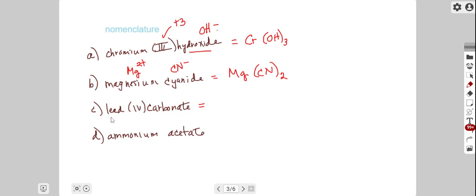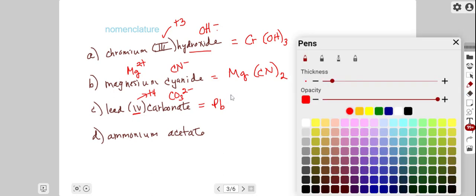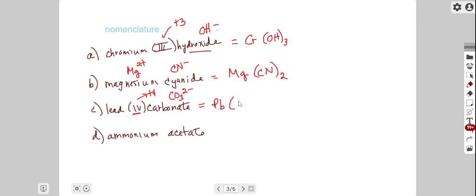The next example uses another polyatomic ion and another transition metal. Notice the 4 for the Roman numeral represents a plus 4 charge for lead here. The carbonate ion is CO3 2 minus. We need to have as many carbonates as are required to balance out that plus 4 charge from the lead. So 2 carbonates would give us a minus 4 charge. Therefore this would be the formula for lead IV carbonate.